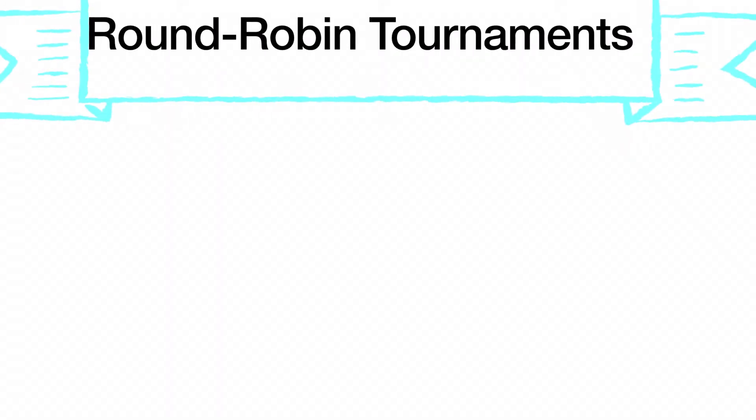The first tournament type we're going to be talking about is round robin tournaments. Round robin tournaments are tournaments where all the players have to play against each other, and the winner will be determined by the player who wins the most games. I'm going to show you how the pairings could work with an even and odd number of participants in a tournament.